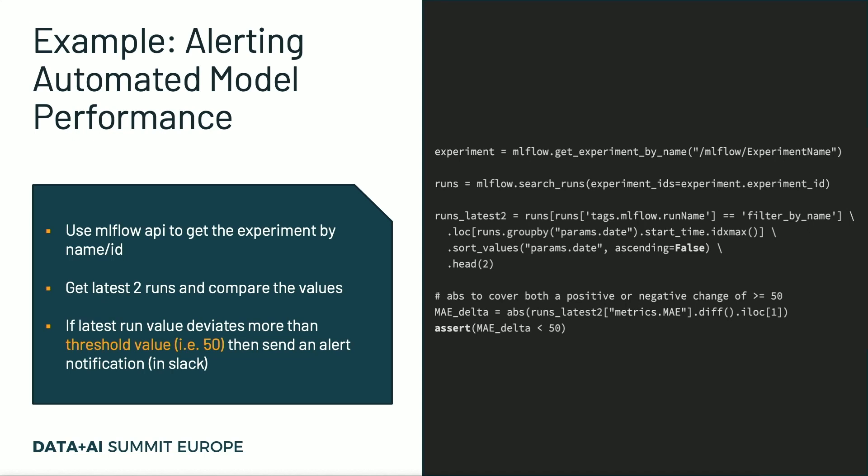To automate the alerting of model performance, these are the steps we follow. First, we use the MLflow API to get the experiment by its name or ID. Then we compare the latest two runs and compare those mean absolute error values. If the latest run value deviates more than the threshold value — here in this case 50 — then we send an alert notification using Slack. On the right part, I show the sample code snippet of how we are doing this using the MLflow APIs.